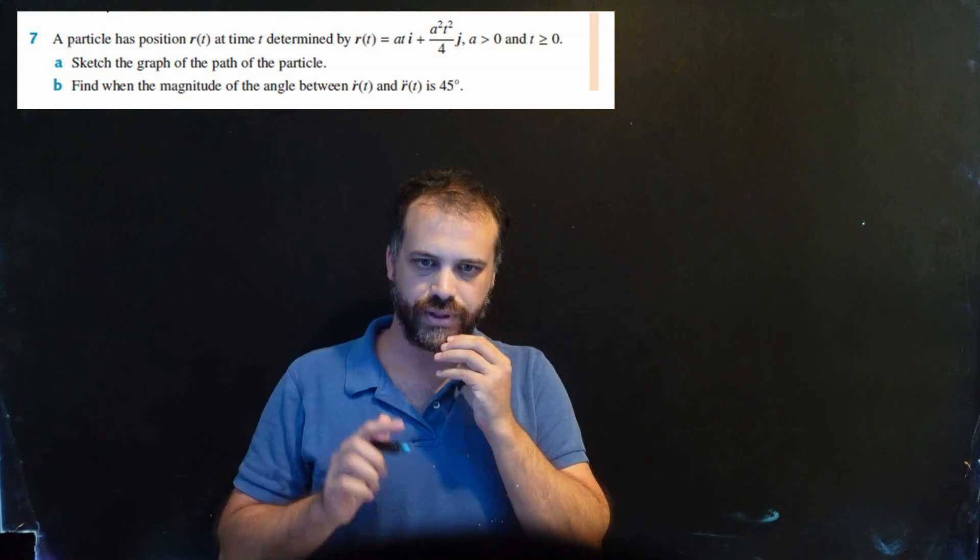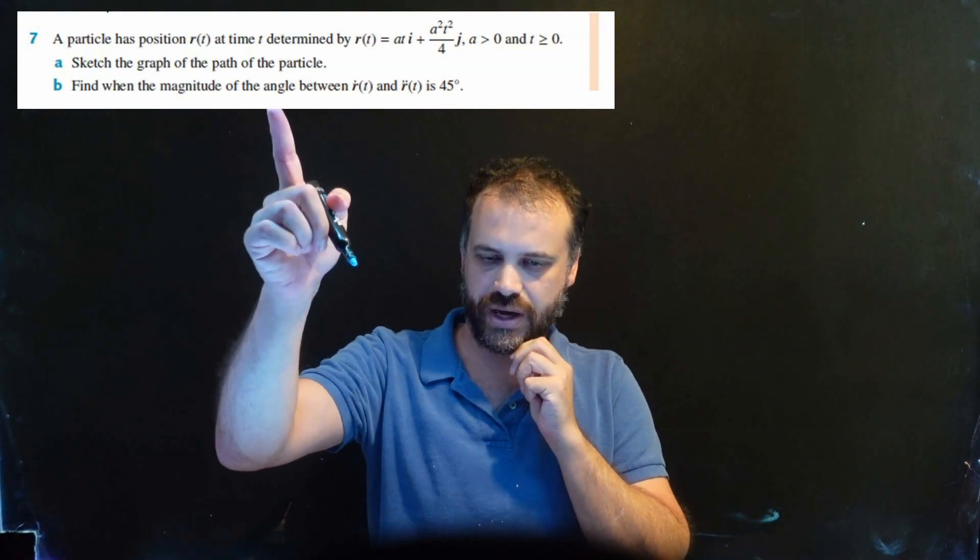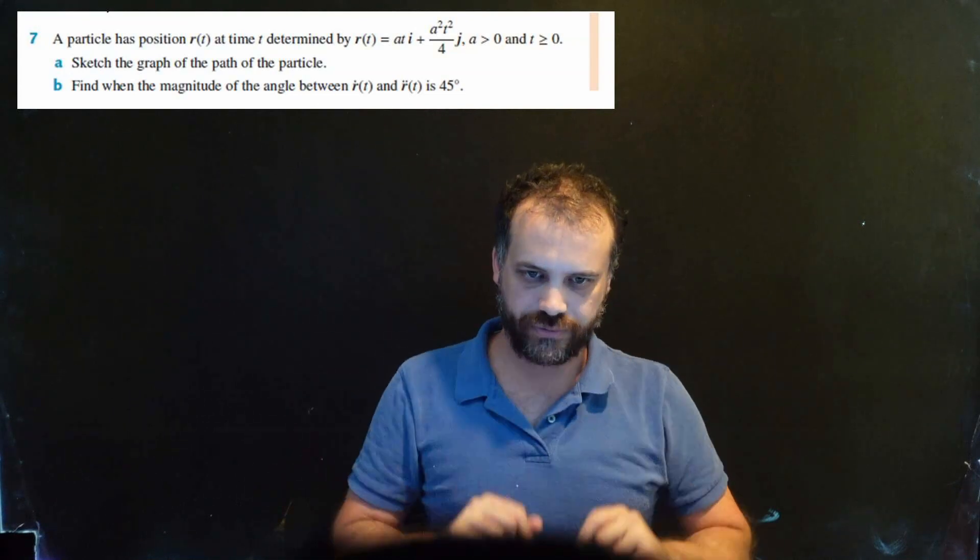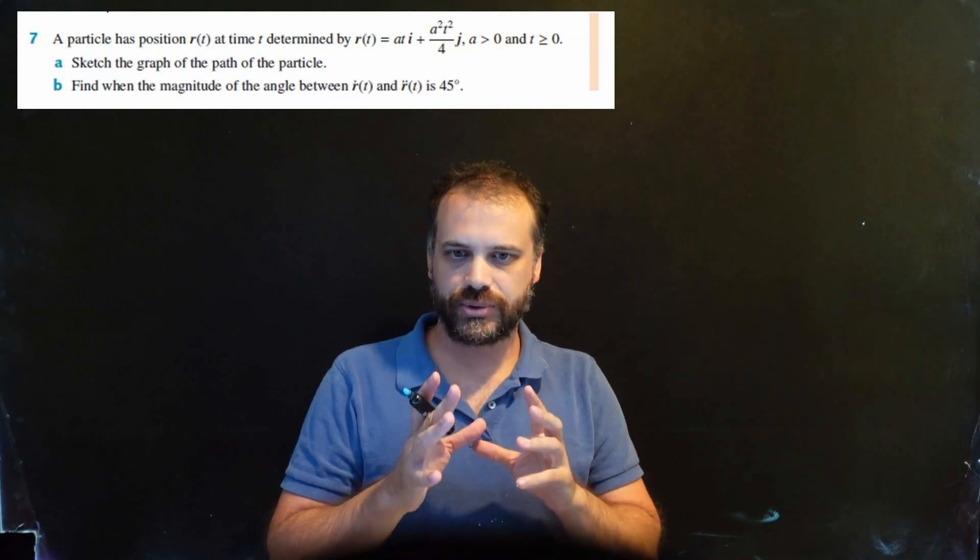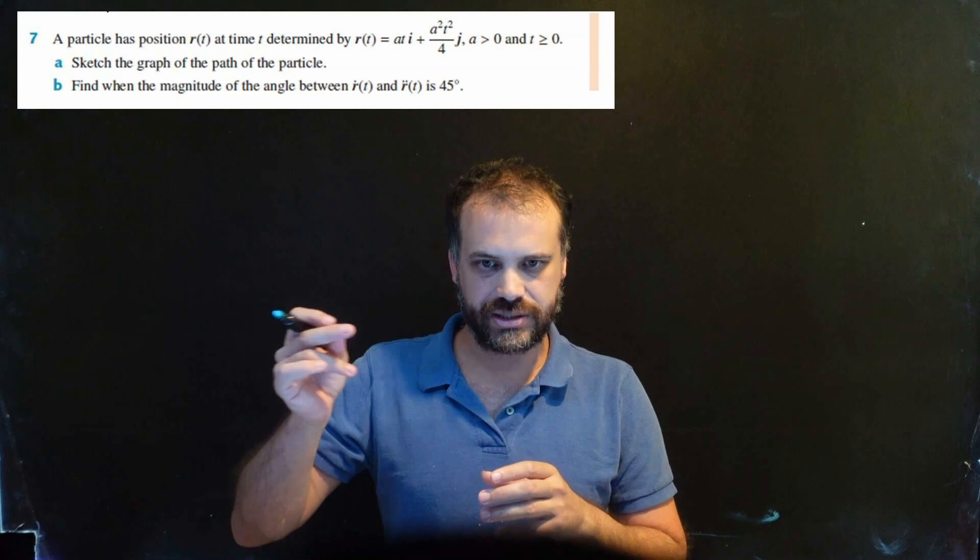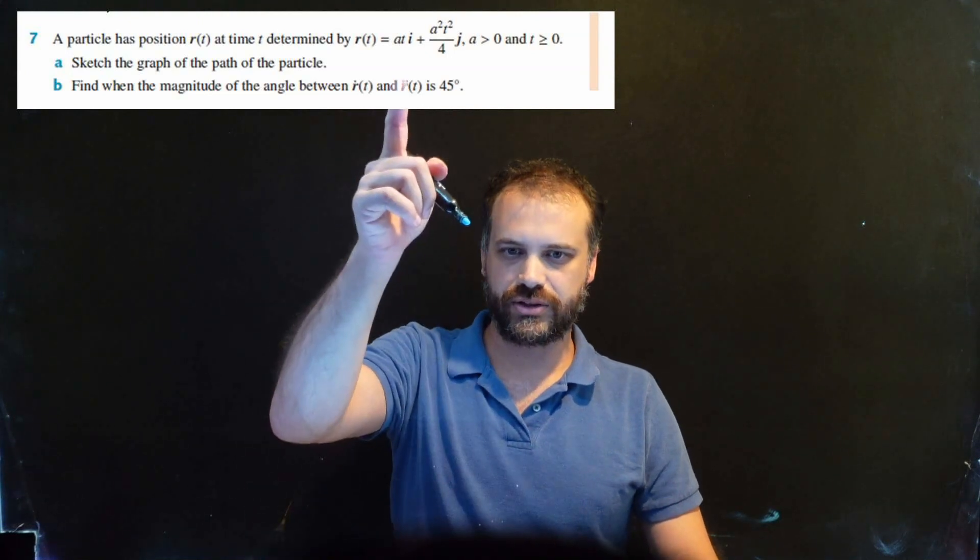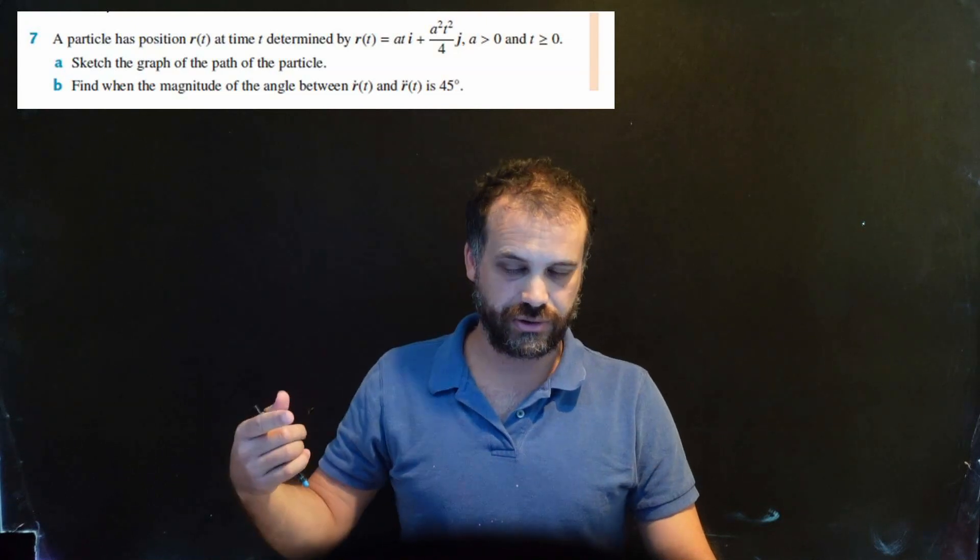So it says, find when the magnitude of the angle between r dot t and r dot dot t is 45 degrees. Now, for us to deal with this, we need to know what r dot t is and r dot dot t is. That's relatively straightforward, we're just finding the derivative of that and then the second derivative of that.